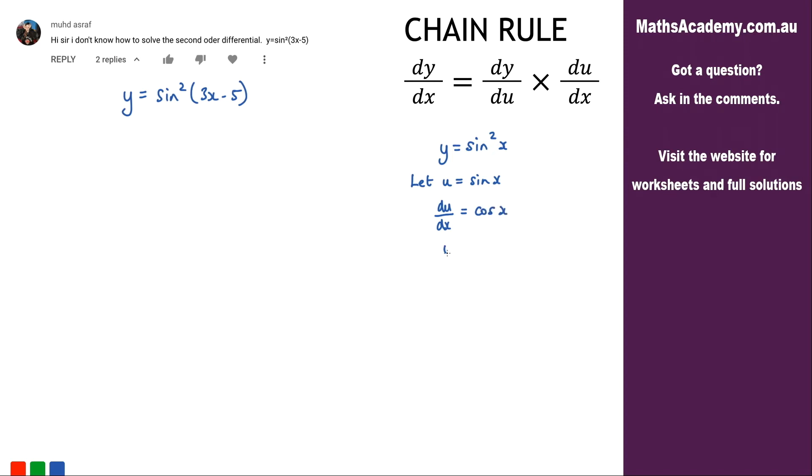Now what we've got so far is that y is equal to u squared. So what I've done here I've just substituted in here. So sine x I've substituted in u for sine x, so I get u squared. Now when I differentiate that I get dy by du would be equal to 2u.